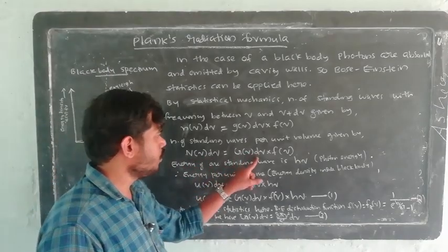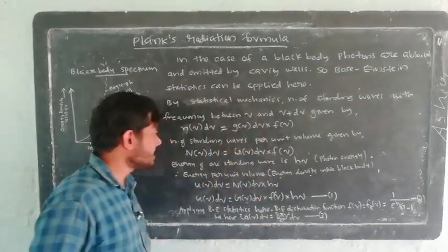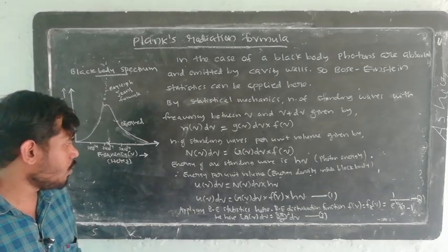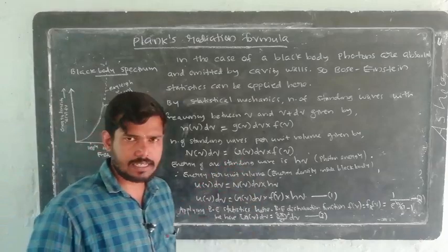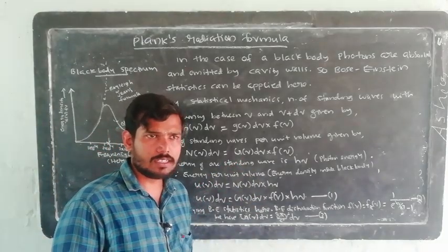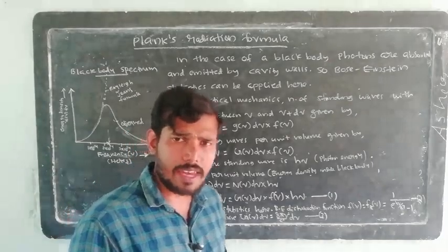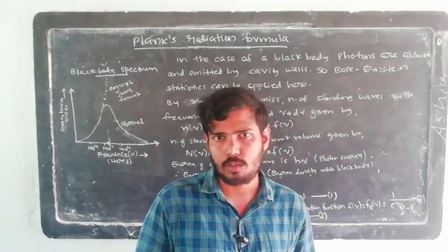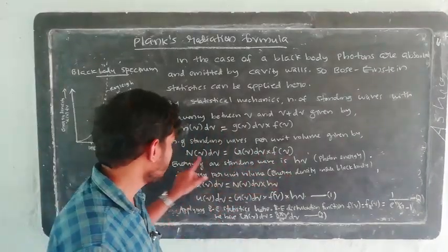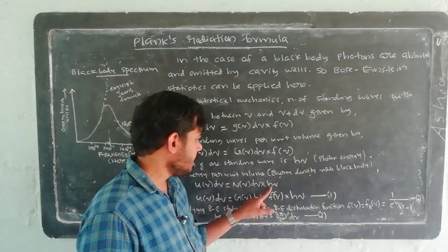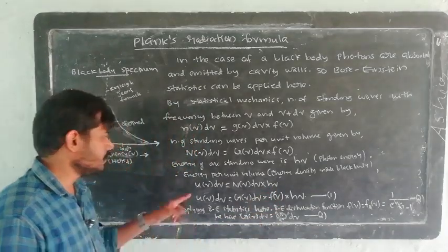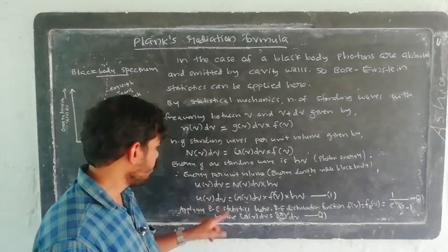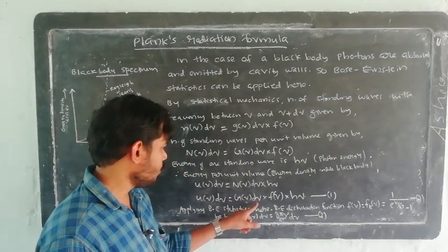Here, N(ν)dν = G(ν)dν · F(ν), which gives the number of standing waves per unit volume. Now, what is the energy density? The total energy equals the number of standing waves per unit volume multiplied by the average energy per standing wave. We multiply the energy inside the black body: u(ν)dν = N(ν)dν · hν. So u(ν)dν = G(ν)dν · F(ν) · hν.